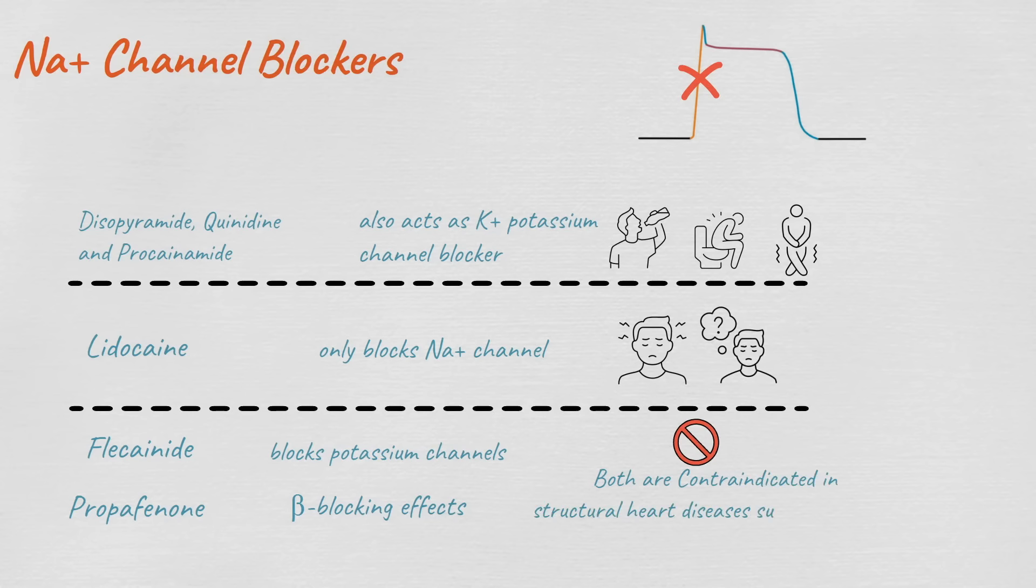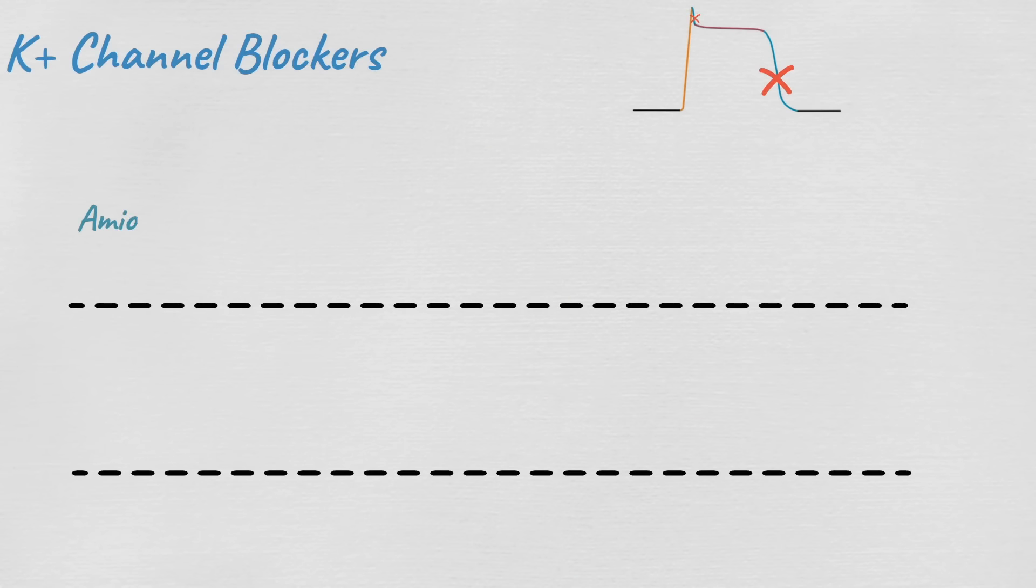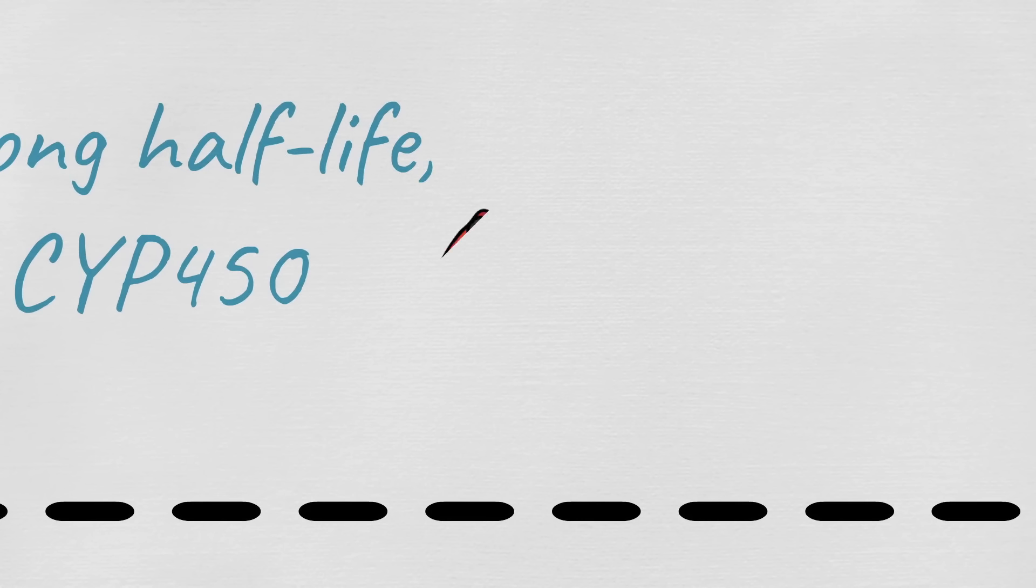Next class are the potassium channel blockers. These agents will lead to prolonging the duration of action potential and increasing the refractory period. First we have amiodarone, which has a broad spectrum of antiarrhythmic activity. It is distributed extensively in the adipose tissue, so it has a very long half-life of several weeks. It inhibits some cytochrome P450 enzymes, which may lead to many drug-drug interactions including warfarin, digoxin, and statins.